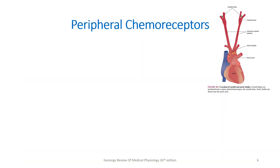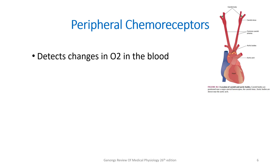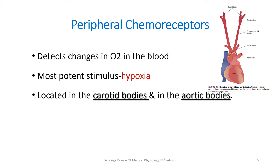Moving on to peripheral chemoreceptors: unlike central chemoreceptors, these detect changes in the oxygen level in the blood. So, central is for carbon dioxide and peripheral is for oxygen. The most potent stimulus for peripheral chemoreceptors is hypoxia, and they are located in the carotid bodies and the aortic bodies.